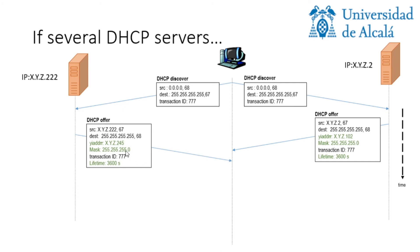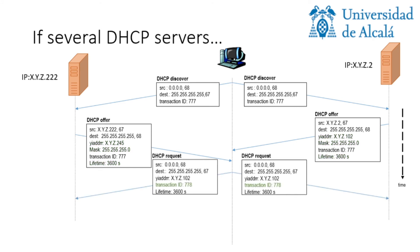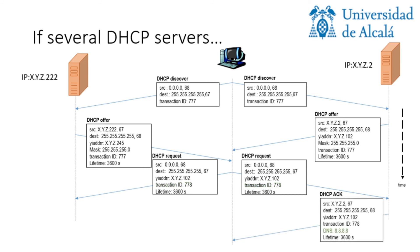The IPs offered are different. In this case, .222 is offering .245 and .2 is offering .102. The host will select an IP, and different criteria could be applied such as IP value, lease time, and so on. This produces the request of a specific IP — in this case .102 — and this request arrives to both servers because it is broadcast. Although the discover, offer, and request messages arrive to the whole network, only one DHCP server will acknowledge the IP: the server that previously offered it. In this case, .102 was offered by the .2 server.